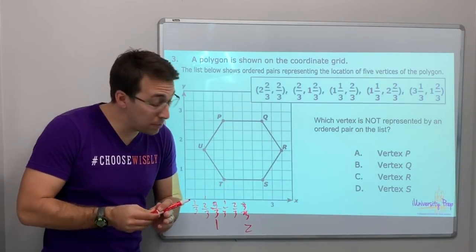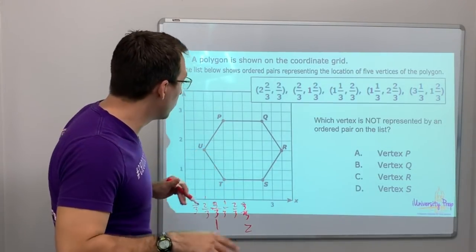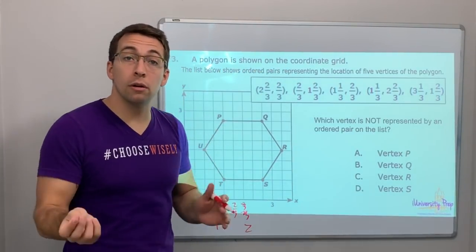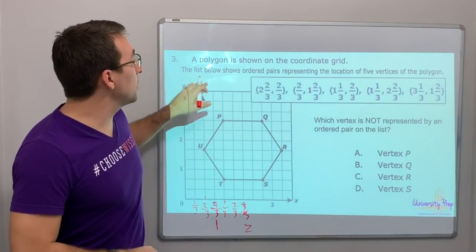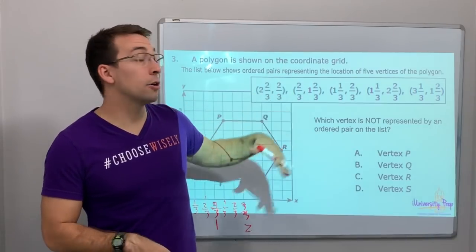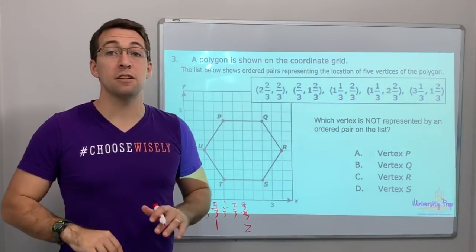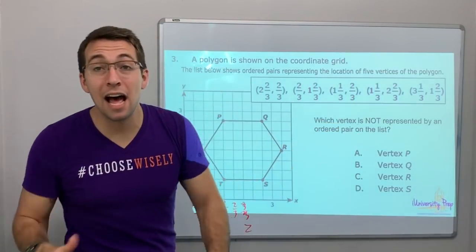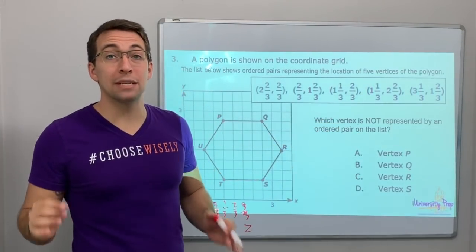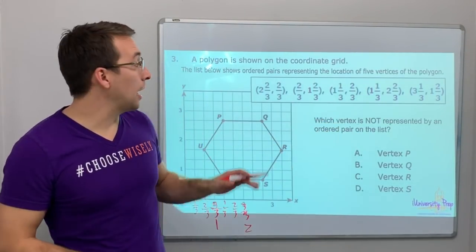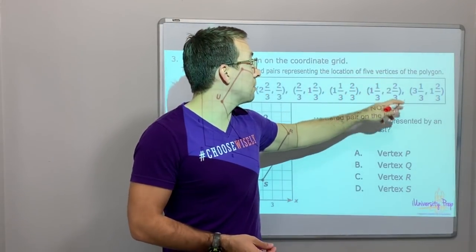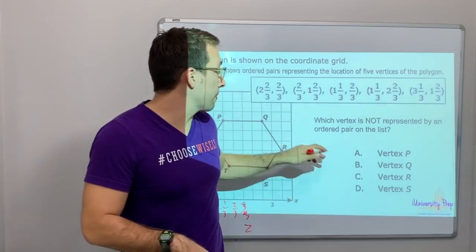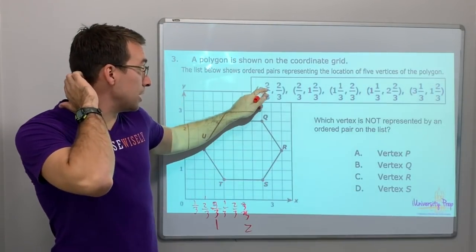A polygon is shown on the coordinate grid. The list below shows the ordered pairs representing the locations of the five vertices of this polygon. Which vertex is not represented? There are five vertices listed but this is a hexagon, so there's one missing.